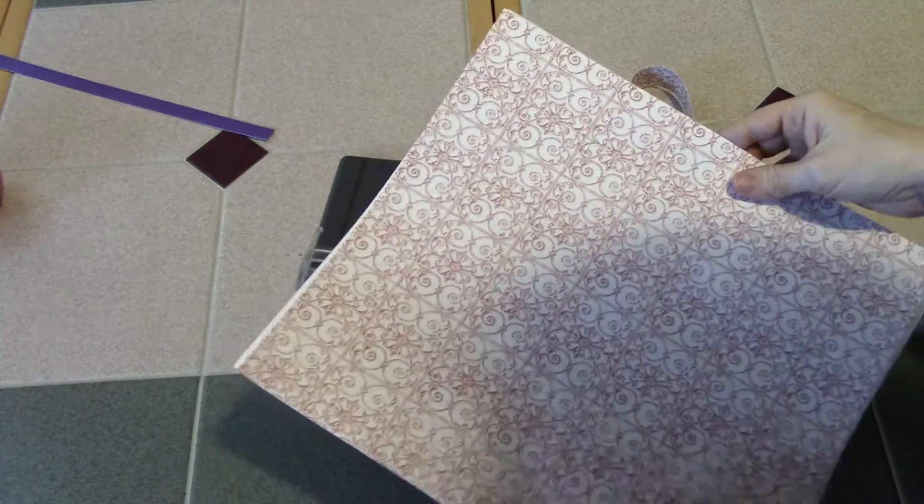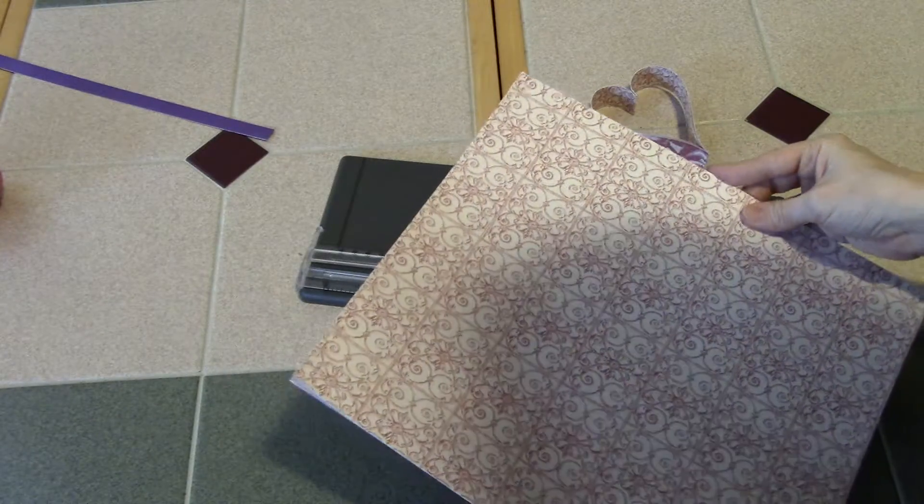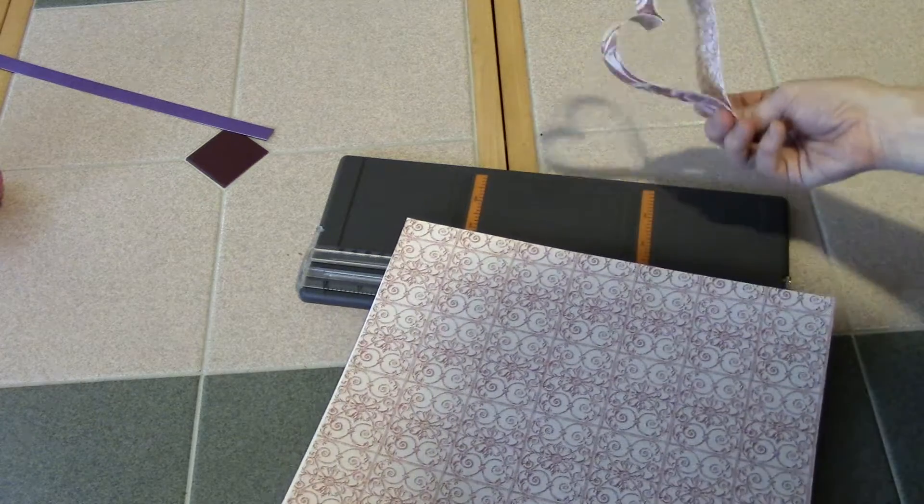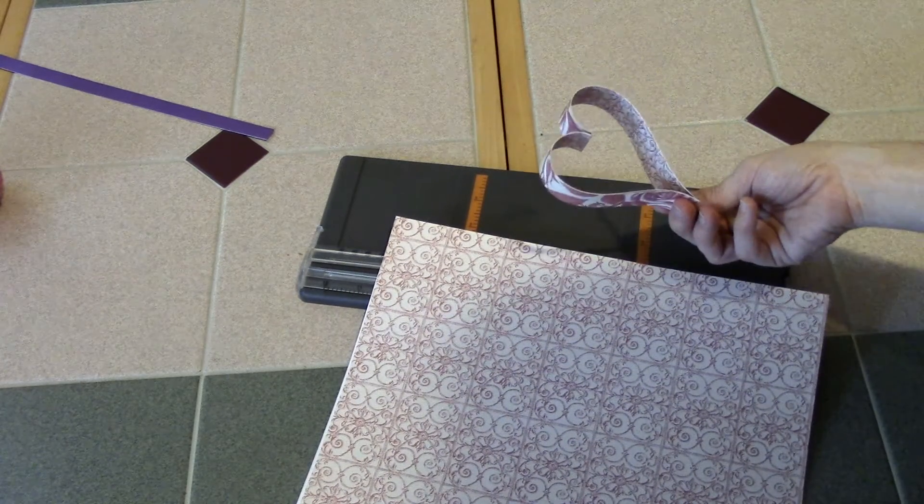I don't have double-sided craft paper, so I'm putting two together. This was 12 by 12, and I'm going to cut one-inch strips and fasten them together into hearts.